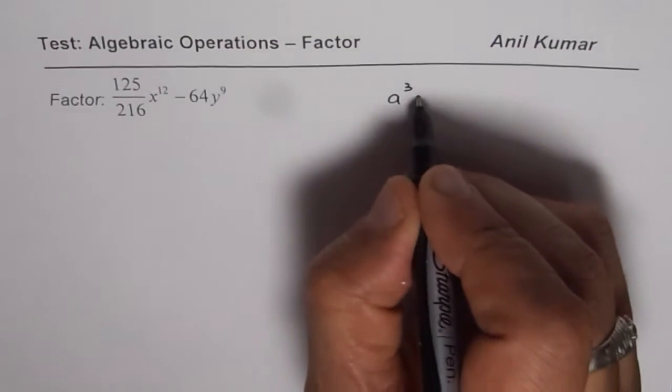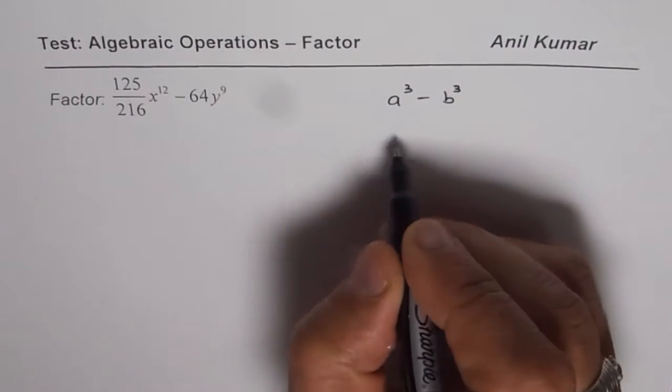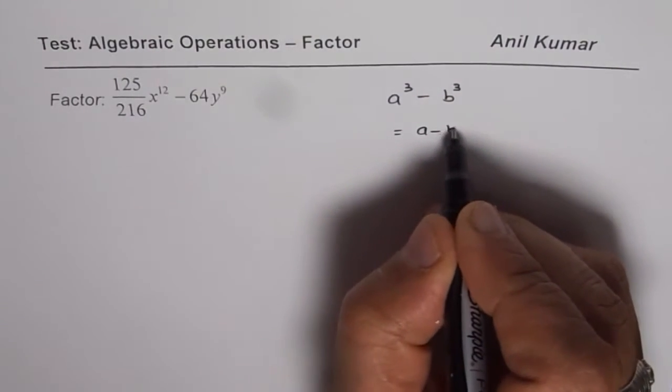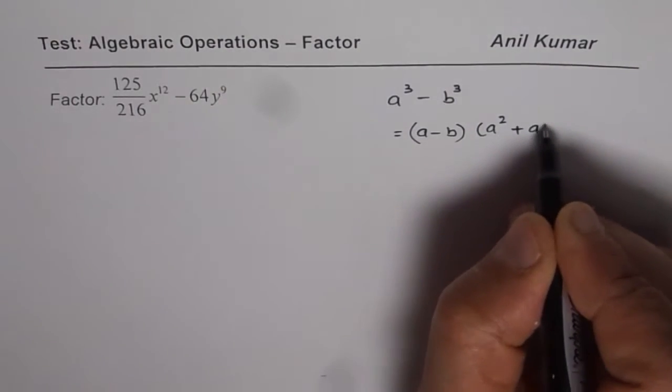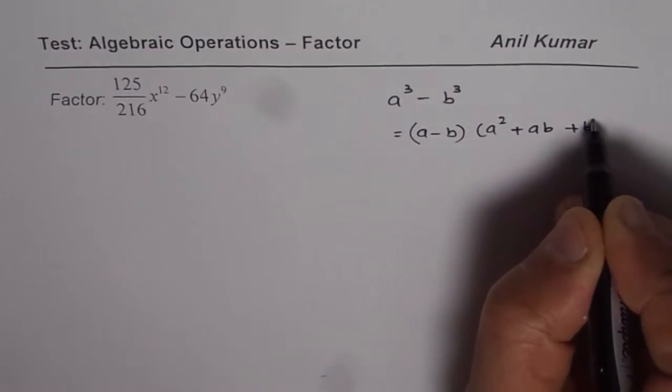You can use difference of cubes. a cube minus b cube could be written as (a minus b) times (a square plus ab plus b square).